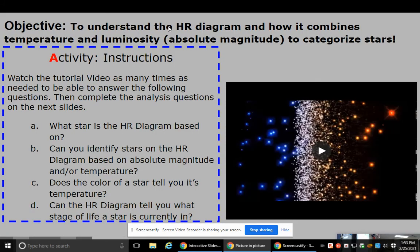Objective. Understand the HR diagram and how it combines temperature and luminosity. Remember, luminosity also means brightness, sometimes mentioned as magnitude, to categorize star. Activity instructions. Watch the tutorial video as many times needed to be able to answer the following questions. Then complete the analysis questions on the next slide. So let's play the video.